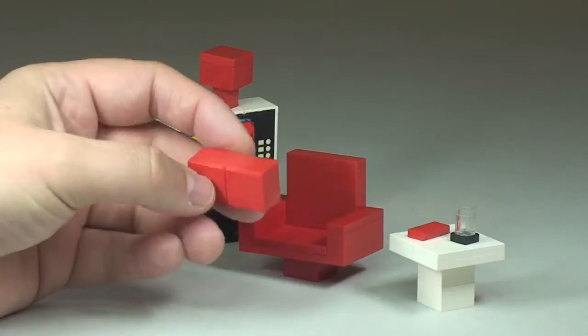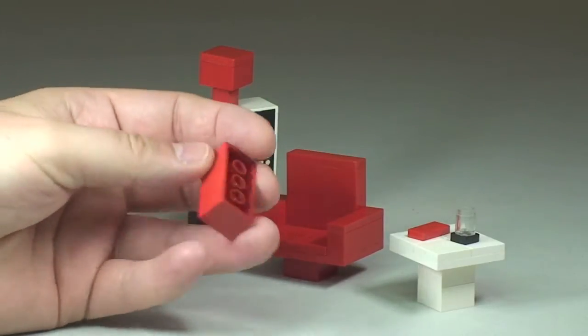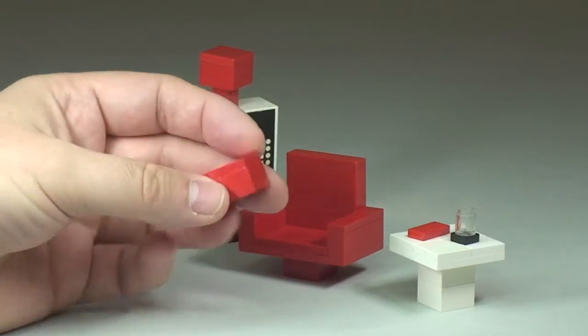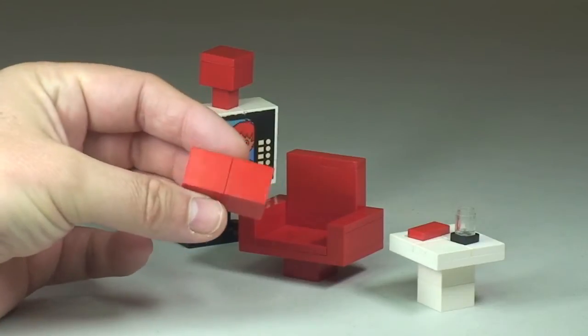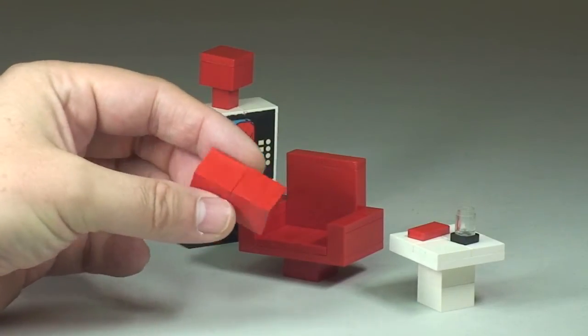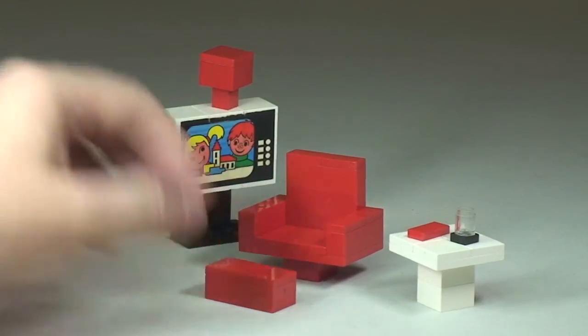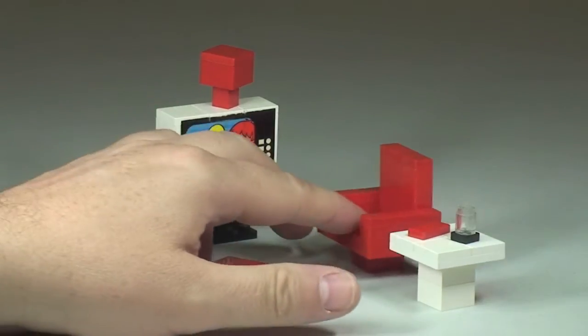And again that's just simply made up very simply with a 2x4 brick and two 2x2 tiles which sit on top of that brick. So that's a footstool there which would go in front of the armchair.